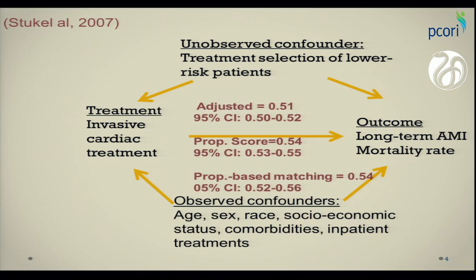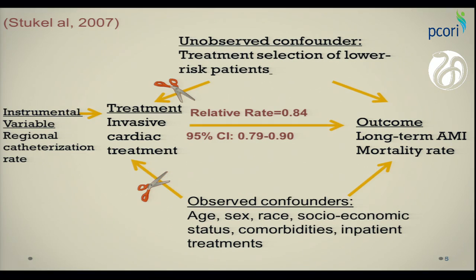But their unobserved confounder was the risk of patients, and the concern was that low-risk patients were given the invasive cardiac treatment. With adjustment, with propensity score or regression analysis, they found a huge positive effect of invasive cardiac treatment. But when they did the IV analysis using regional catheterization rate as an IV, they found that effect was not as substantial as it was in the regression analysis, and they adjusted for the selection of lower-risk patients for invasive cardiac treatment.